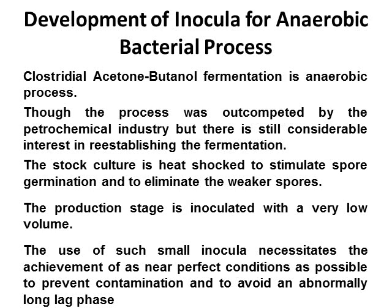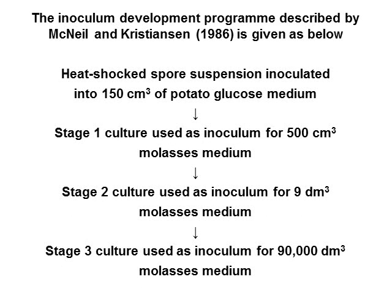The production stage is inoculated with a very low volume. The use of such small inocula necessitates near-perfect conditions to prevent contamination and to avoid an abnormally long lag phase. The inoculum development program described by McNeil and Christians (1986) begins with a heat-shocked spore suspension inoculated into 150 cubic centimeters of potato glucose medium. In stage 1, this culture is used as inoculum for 500 cubic centimeters of Clostridium medium. In stage 2, culture from stage 1 is used as inoculum for 9 cubic decimeters of Clostridium medium. In stage 3, culture from stage 2 is used as inoculum for 90,000 cubic decimeters of Clostridium medium.